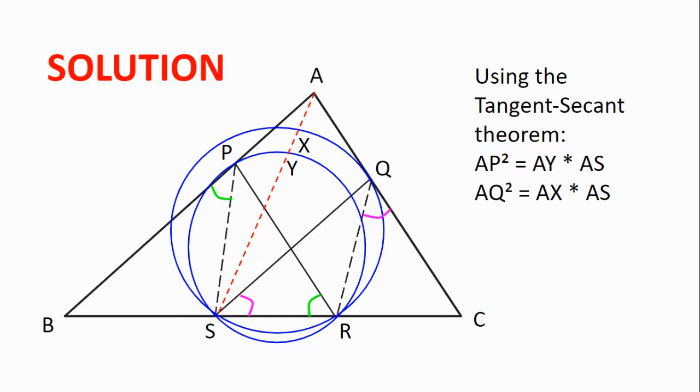Now, from the question, we know that AP is equal to AQ, so we get AY multiplied by AS is equal to AX multiplied by AS. But we know that AS is equal to AS, so what we get is AY equals AX.